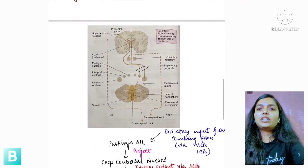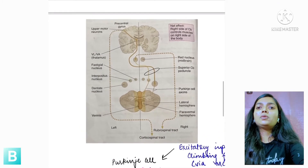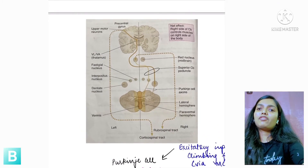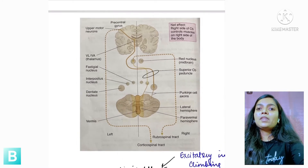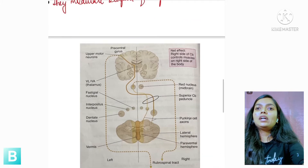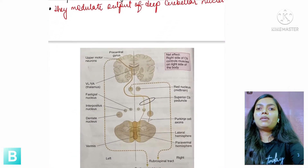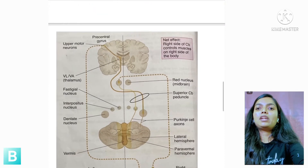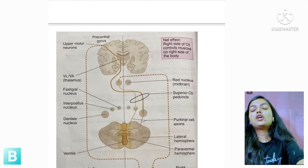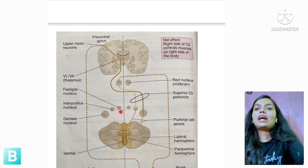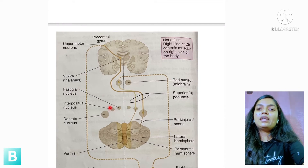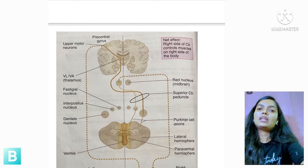Now let's learn about the tracts — how the cerebellum helps with fine tuning. The cerebellar output goes to the deep cerebellar nuclei. From medial to lateral, there are three main cerebellar nuclei: the medial most is the fastigial nucleus, the middle one is the interposed nucleus, and the lateral most and largest is the dentate nucleus.